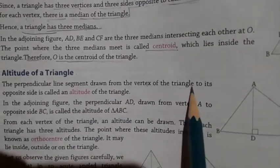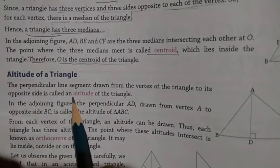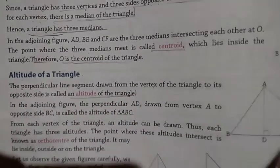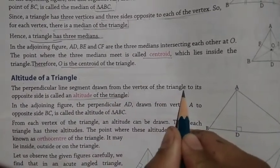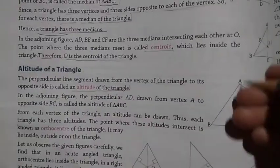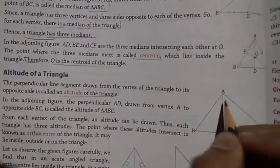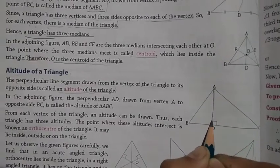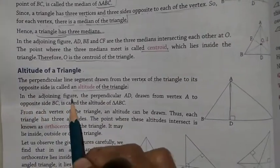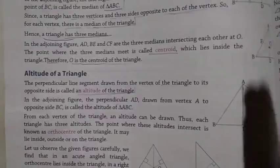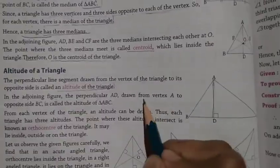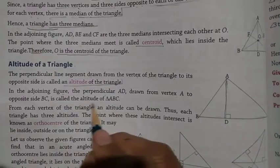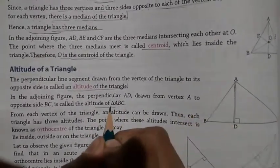The altitude of a triangle: A perpendicular line segment drawn from the vertex of a triangle to its opposite side is called an altitude of the triangle. In the adjoining figure, the perpendicular AD drawn from vertex A to the opposite side BC is called the altitude of triangle ABC.